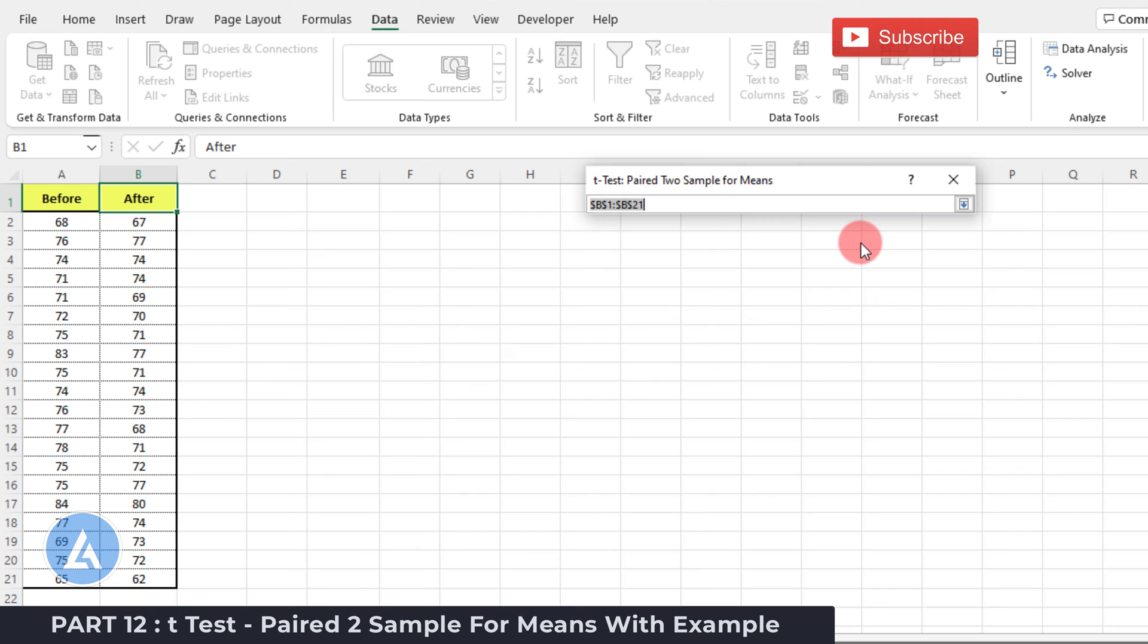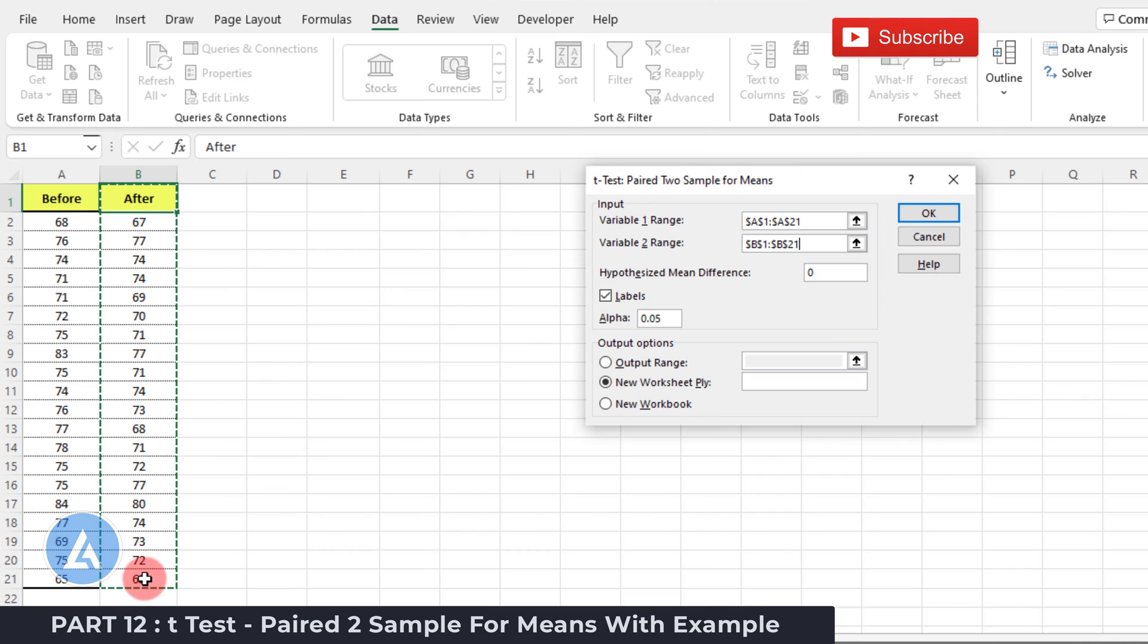After that we need to select the variable 2 range. In that case we need to select the after data and make an enter. Here in Hypothesized Mean Difference we need to put the value at 0, because we had considered mean before is equal to mean after.